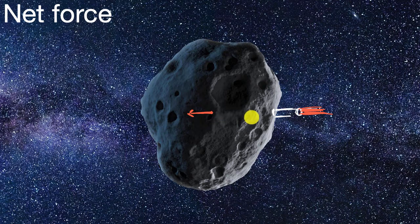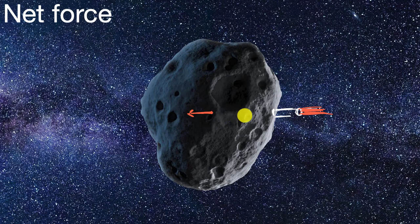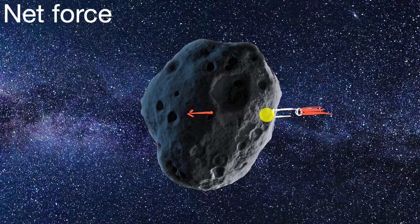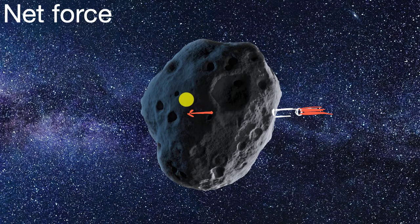So we will be pushing towards the left. And when we push to the left, it doesn't just start to move the asteroid — it actually accelerates the asteroid to the left. So the longer that this rocket is running, it's going to make the asteroid move to the left faster and faster.